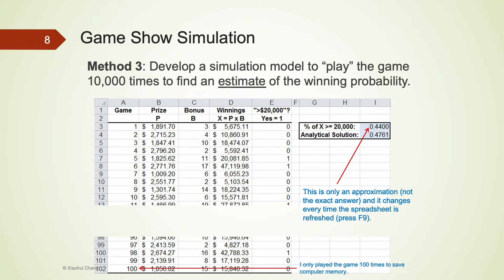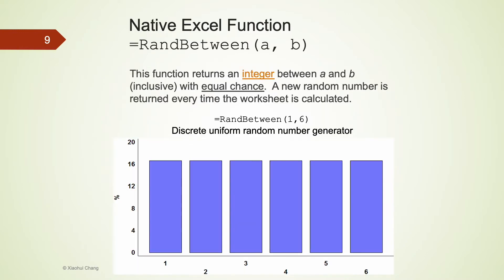Let's start with the first approach of simulating this problem using native Excel functions. The first native Excel function is RANDBETWEEN, which takes two arguments, A and B. This function returns an integer between A and B with equal likelihood. Whenever this function is used, a new random number is generated.